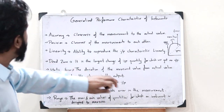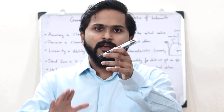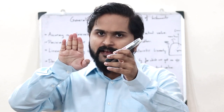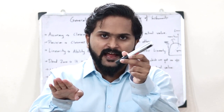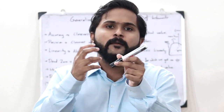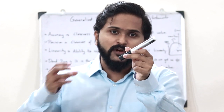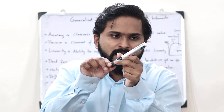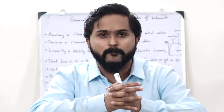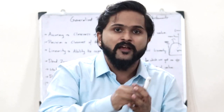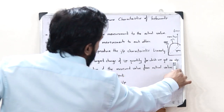Next we have dead zone, which is a very interesting parameter. Imagine the speedometer of your car showing 60 kilometers per hour. If you accelerate and you can feel the car increasing its speed, but the speedometer still shows 60 km/h — only after the car crosses a certain speed does the reading change. That particular speed range for which we see no change in the speedometer reading is the dead zone. It is defined as the largest change of the input quantity for which we get no output.